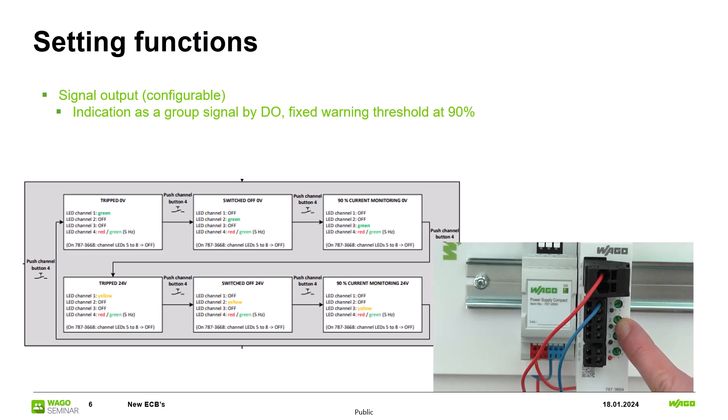If the channel number 2 lights up green the digital output is pulled to 0V if the channel has been tripped or switched off. If the third channel indicates green the digital output is triggered when 90% of the current value setting is reached.